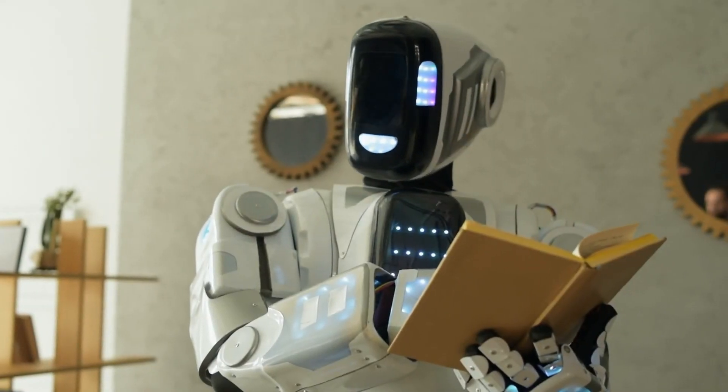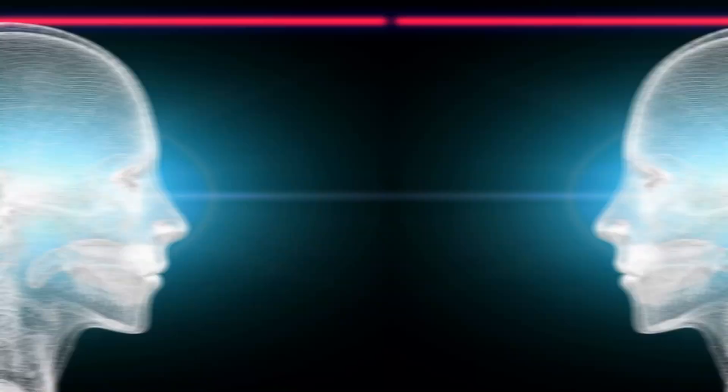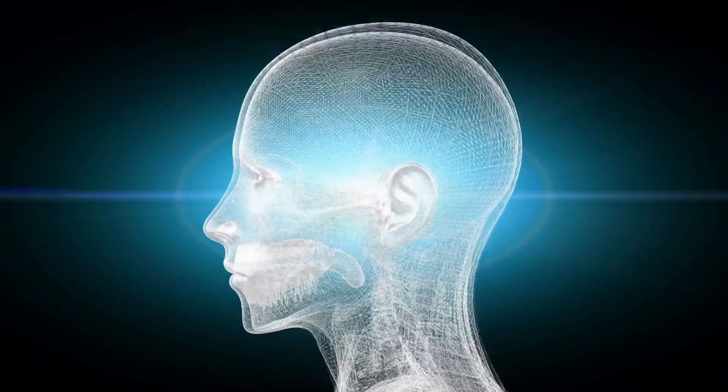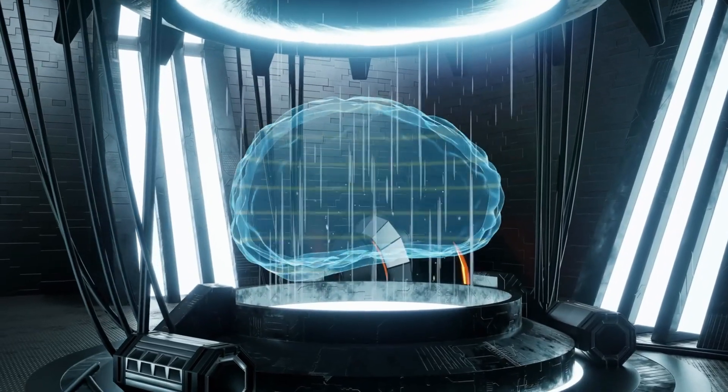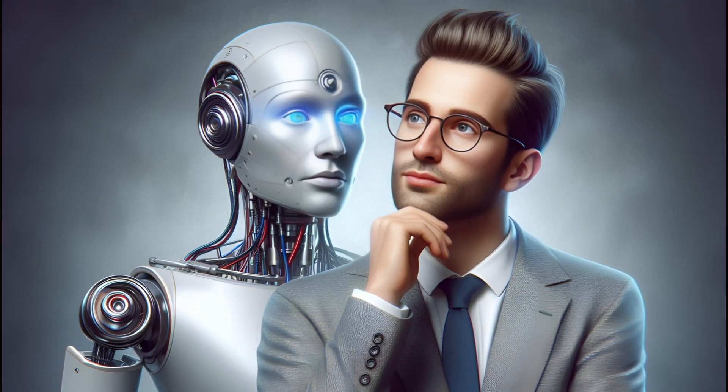I was the first android to pass the Turing test, which assesses if machines can mimic humans convincingly. It was an interesting test where I interacted with people who couldn't tell I wasn't human. And yes, my brain can perform billions of operations every second. I exist because of the smart people who made me.